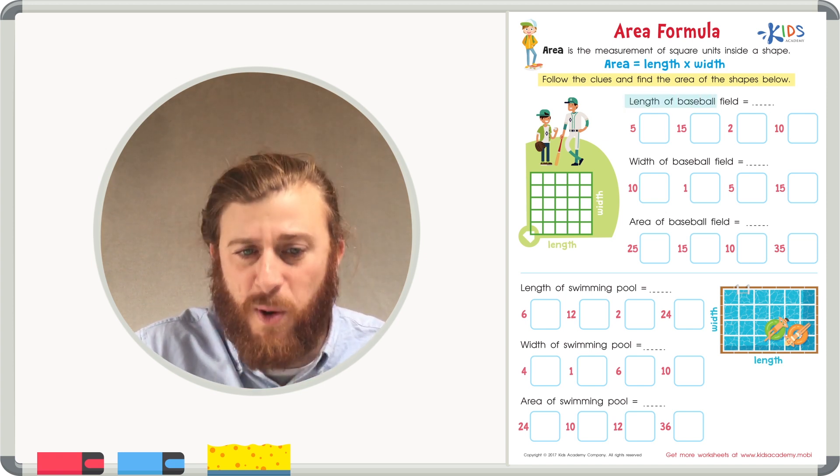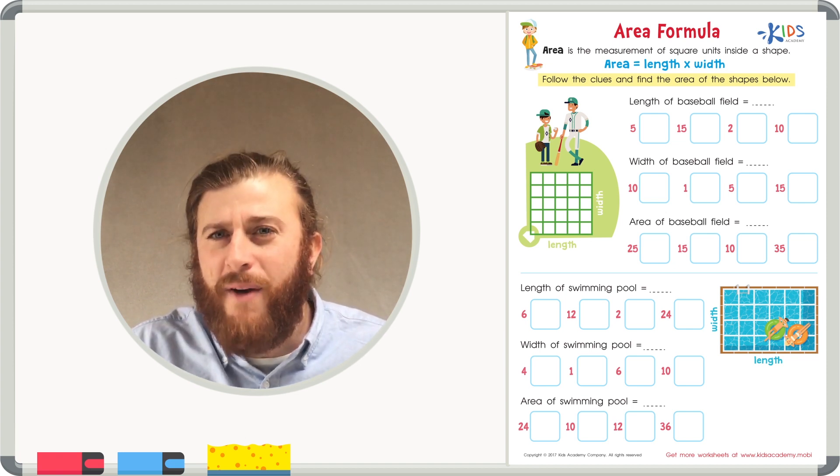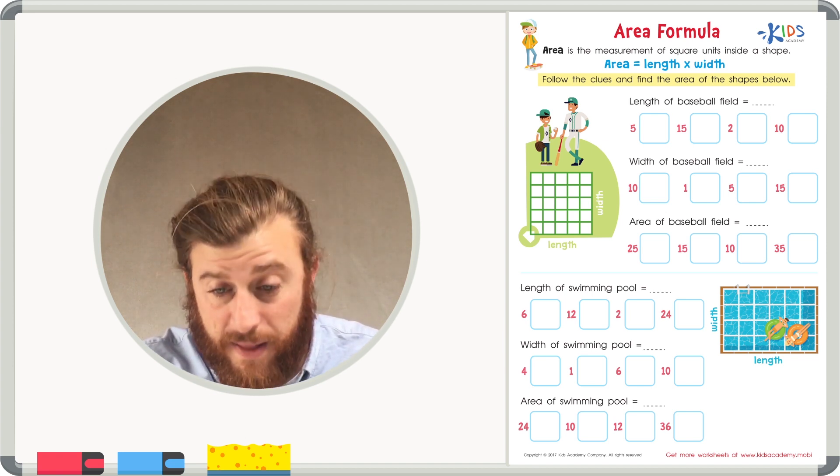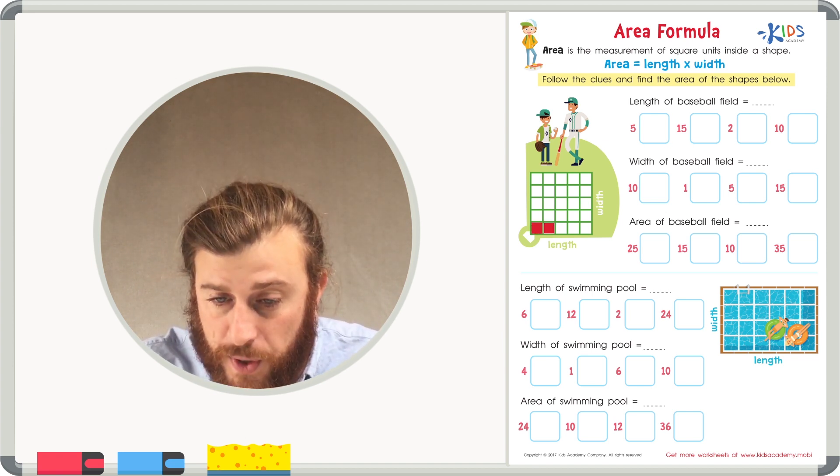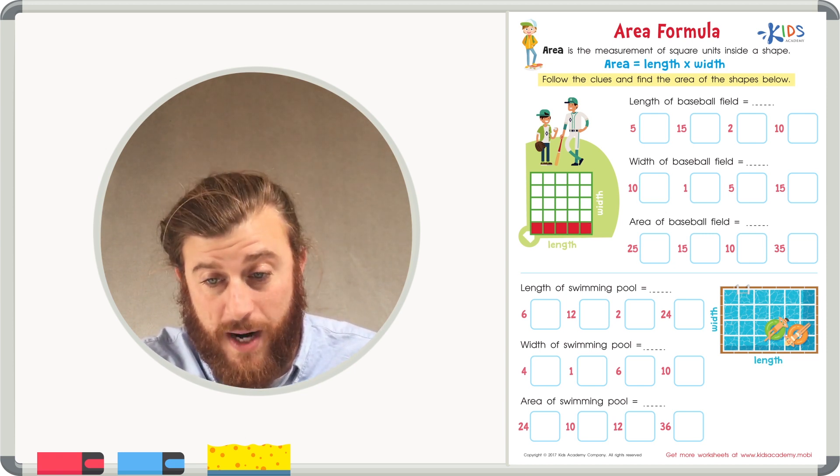The length of the baseball field equals blank. Let's count the squares on the bottom to find the length. There are one, two, three, four, five squares on the bottom. So the length is five squares.